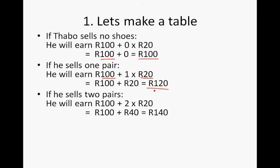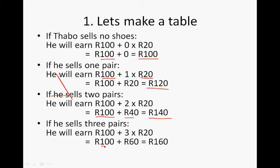If Tabu sells two pairs of shoes during a day, he will earn 100 rand plus two times 20, which is 40 rand, so he will earn 140 rand. If Tabu sells three pairs of shoes, he will earn 100 rand plus three times 20 rand, which is 60 rand, giving us 160 rand. Every time we take the 100 rand and add a multiple of 20 to get the different amounts he will earn.